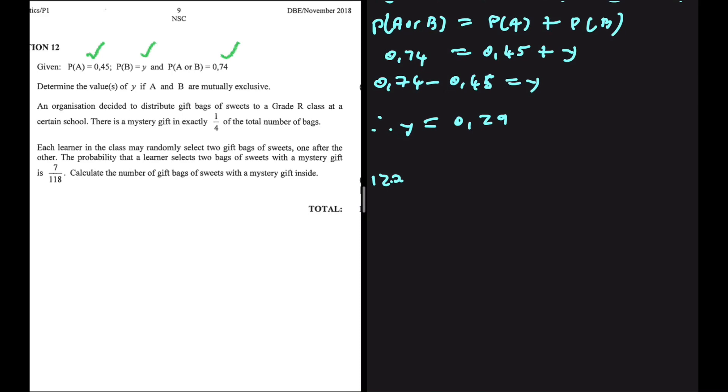Each learner in the class may randomly select two gift bags of sweets, one after the other. The probability that a learner selects two bags of sweets with a mystery gift is 7 divided by 118. Conclude the number of gifts of sweets with a mystery gift inside.